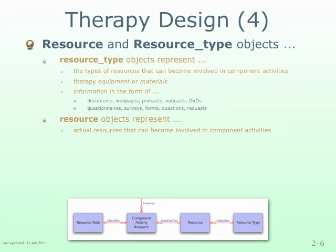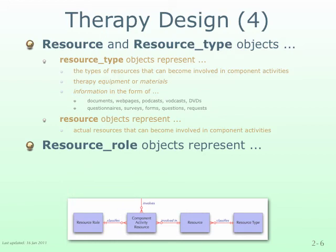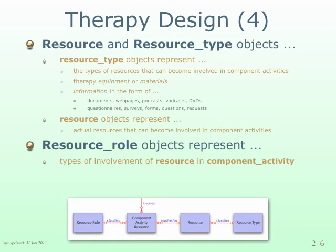Then there are the resource role data objects which represent the types of involvements of an item of equipment, a quantity of material or an item of information in the performance of a particular functional component of a therapy program. For example, a video clip may provide a demonstration of how a particular activity is to be performed, or provide advice about how to deal with a particular kind of emotional problem. An item of equipment may be used to measure the performance of a particular activity.